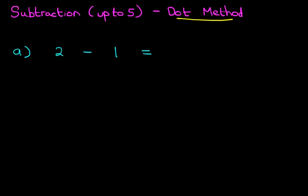So that is our question. It's a nice easy one: 2 minus 1. So what is 2 minus 1, and how do we do this using the dot method?